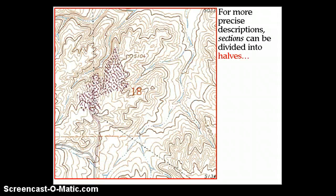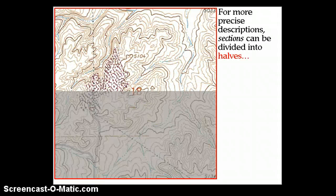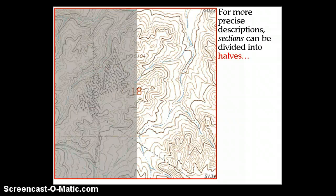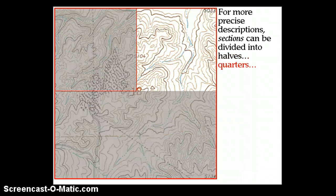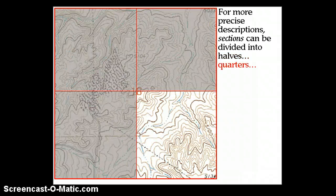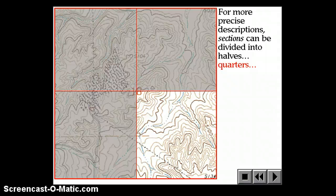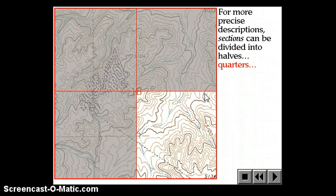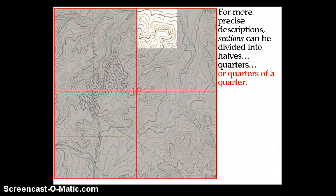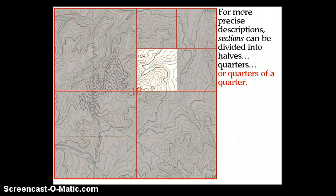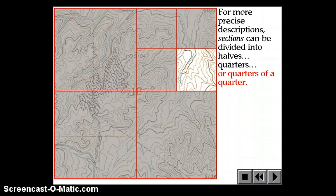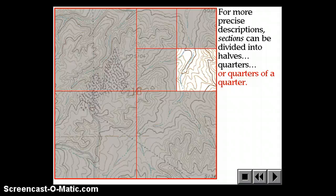That's still a pretty big area, one mile by one mile. So we often divide that into other sections. Sections can be divided into halves, a western half, a northern half, a southern half, or they can be divided into quarters. This is currently showing us the southeast quarter of Section 18. And then you can take quarters and divide those further into quarters, so that's a quarter of a quarter.